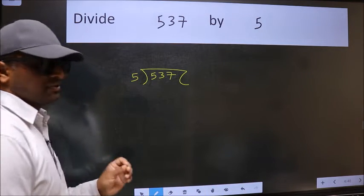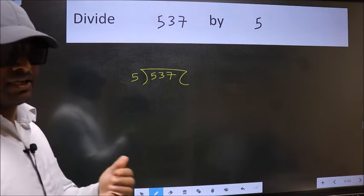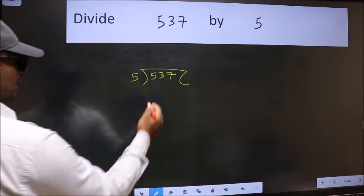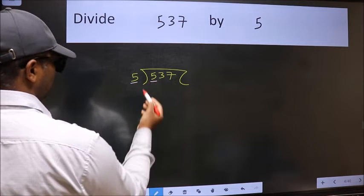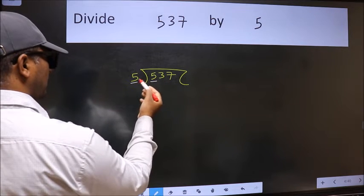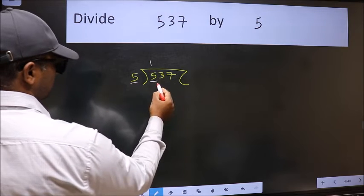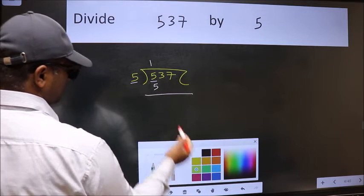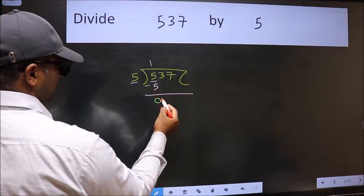This is your step 1. Next, here we have 5 and here also 5. When do we get 5 in the 5 table? 5 once is 5. Now we should subtract. We get 0.